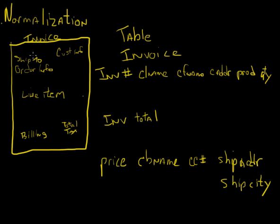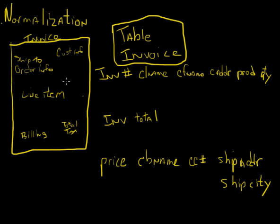If I just buy one thing on this invoice, this is kind of an okay representation. But what happens when I start having multiple line items? I might have multiple billing pieces — the person might have a gift card, a check, and a credit card, making a combination of different billing payments. Multiple line items might have different ship-to information, which could mean different tax rates for each one. So if I have a really complex invoice, I'm going to have a lot of redundant information.